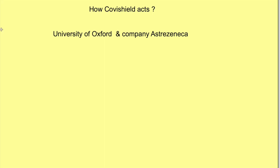Covishield vaccine is the product of the University of Oxford and company AstraZeneca. For understanding how Covishield acts, we need to be a little bit aware about the structure of coronavirus.